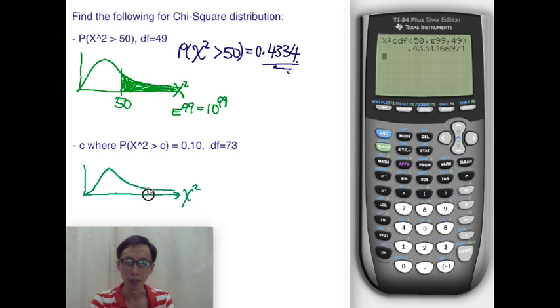We're given the area is 0.10, but we need to find the value c where P(χ² > c) = 0.1 at degree of freedom 73.